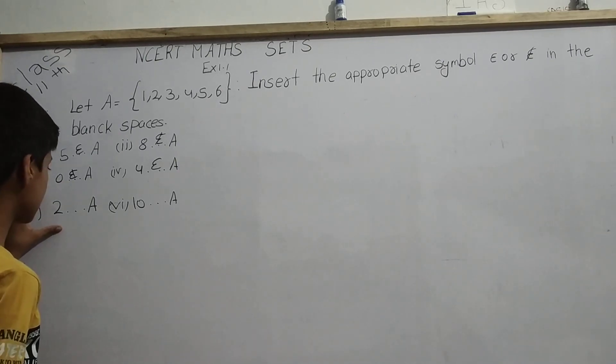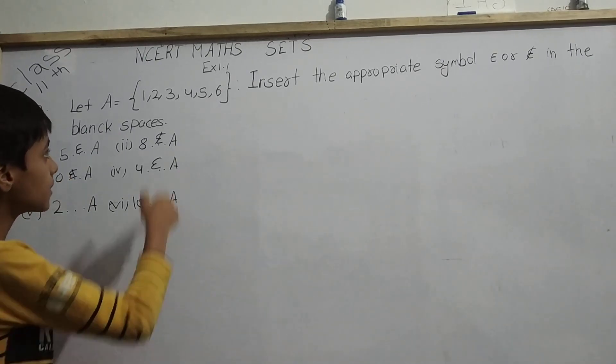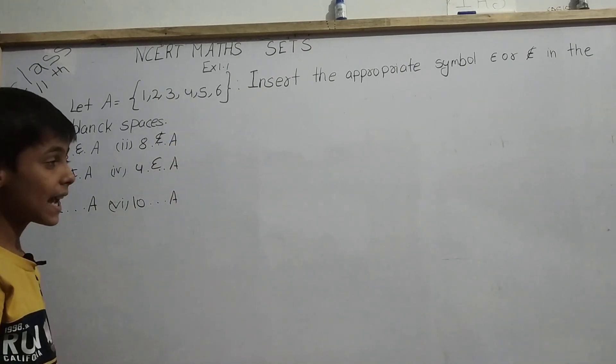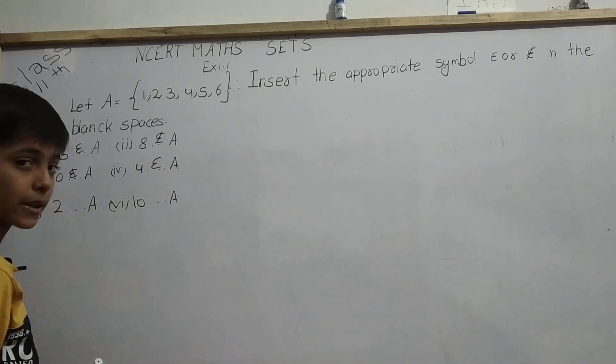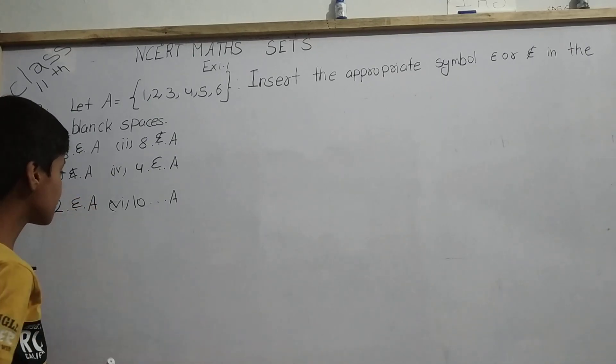Next is 2 dash A. Here we also have 2. If we have 2, it means 2 also belongs to A. So we will put epsilon symbol here.